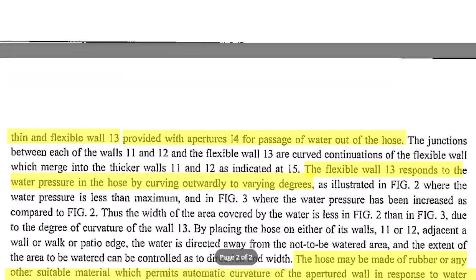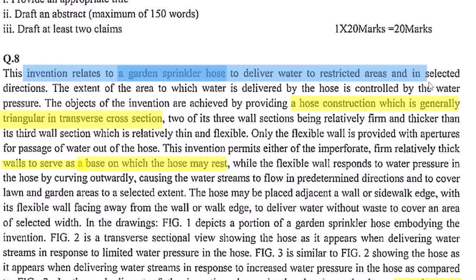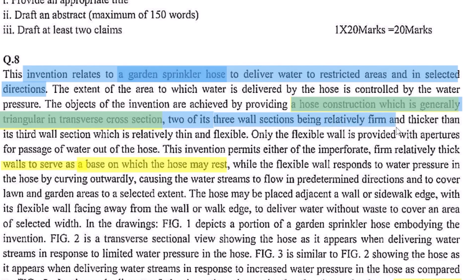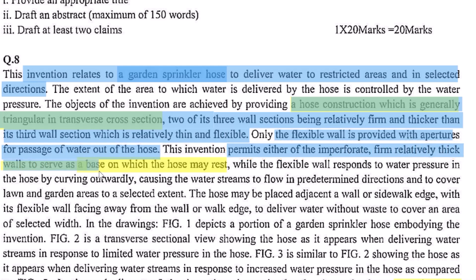Let us move to the last requirement, which is providing the abstract. The first paragraph before we go towards figure 1 provides us with all the details that can go into our abstract. The invention provides a garden sprinkler hose to deliver water to restricted areas and in selected directions. The garden sprinkler hose construction is generally triangular in cross section, wherein two of its three wall sections are relatively firm and thicker than its third wall section which is relatively thin and flexible. Only the flexible wall is provided with apertures for passage of water out of the hose. The invention permits either of the imperforate firm relatively thick walls to serve as a base on which the hose may rest, while the flexible wall responds to water pressure by curving outwardly, causing water streams to flow in a predetermined direction to cover lawn and garden areas to a selected extent.